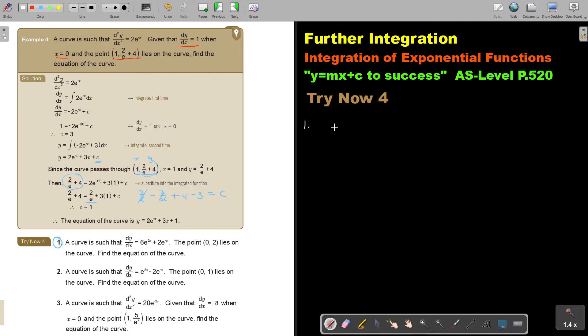So let's start with number 1. So dy/dx is equal to 6e^(2x) plus 2e^(-x). The point lies on the curve. That means the original curve.